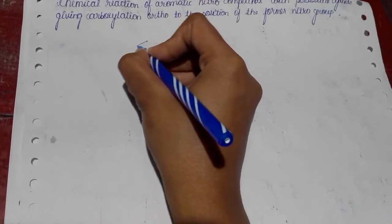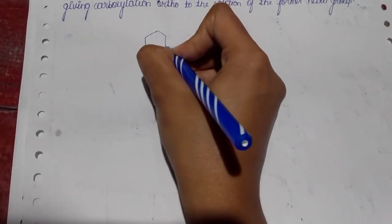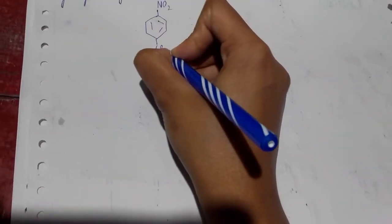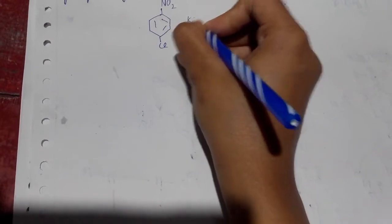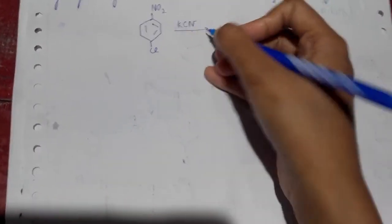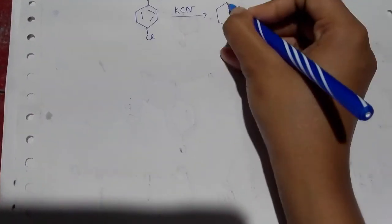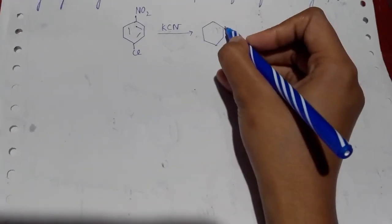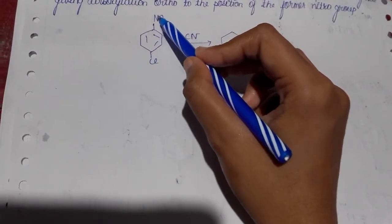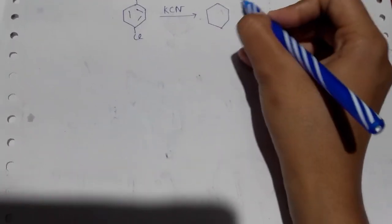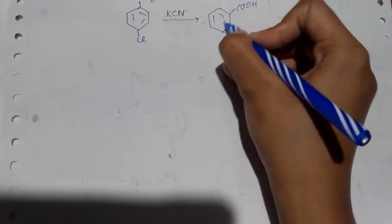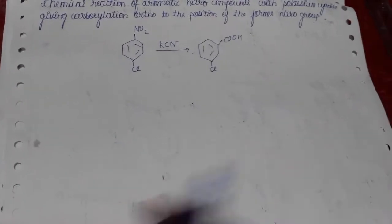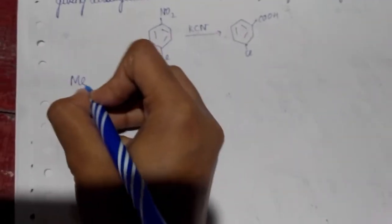So if I just show the reaction: we take any nitro compound, and with this you take potassium cyanide, and as a result we get carboxylation in the ortho position to the former nitro group. This was the nitro group, and its ortho position is here, so here there will be carboxylation. Now let's get on to the mechanism for this reaction.